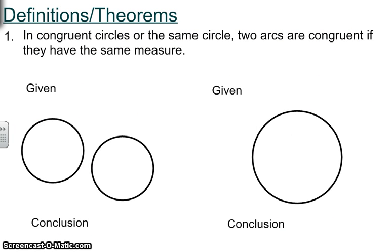And then with our definitions and theorems, the first one that I need you to know in order to do everything in this section is if in congruent circles, which is what we have here, two arcs are congruent if they have the same measure. So if you have two arcs, M, A, T, and H. So if they have the exact same arc, so we would be given that MA is, let's say, 60 degrees, and TH is also 60 degrees.